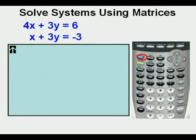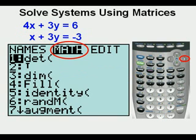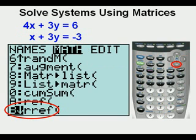For the next step, press second, then back to the matrix menu by pressing the X to the negative one key on the left. Arrow once to the right to the math sub-menu. Arrow down until you get to the RREF choice. RREF stands for reduced row echelon form.